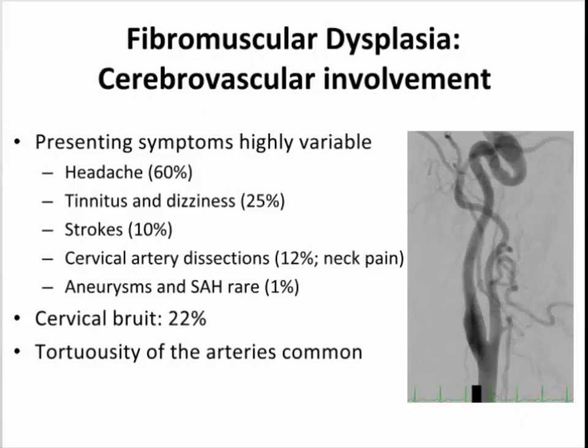Tortuosity is common in FMD — where vessels end up with a tortuous path — and we don't really understand why. We know it occurs in many vascular connective tissue diseases like Marfan syndrome and Loeys-Dietz syndrome, which implies there's an underlying defect in the artery contributing to these diseases.